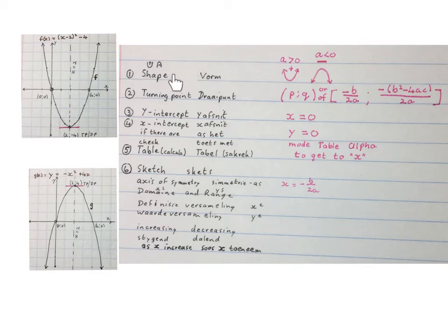We're going to show you how to use these six steps when sketching a parabola. First you look for the shape, then you look for the turning point, the y-intercept next, the x-intercept next if there are, then we'll use the table method on the calculator to check ourselves and then we will sketch the graph and answer some extra questions about the graph.